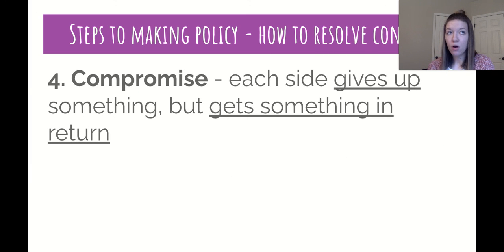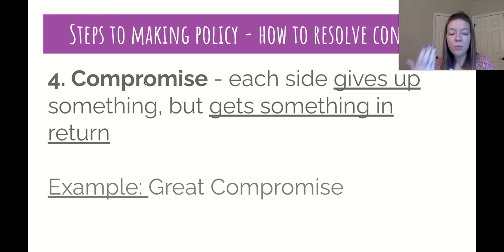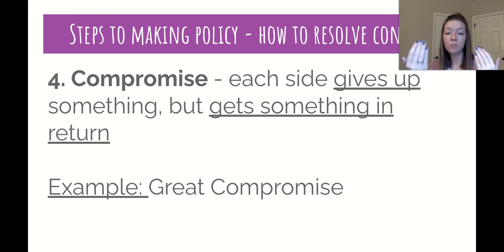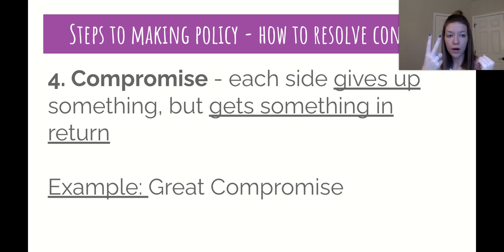Finally, we have compromise. Compromise is difficult because each side has to know that they're going to give up something — they won't get something they want in exchange for something in return. Think back to our Great Compromise: big states wanted representation based on population, small states wanted equal representation. They decided to compromise and create a two-part Congress so that both get something they want while giving up other things.